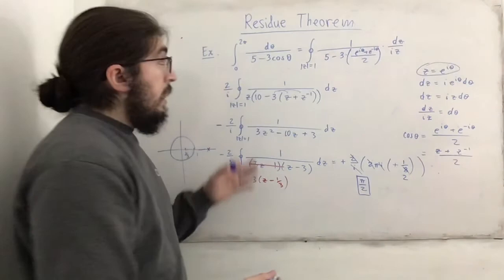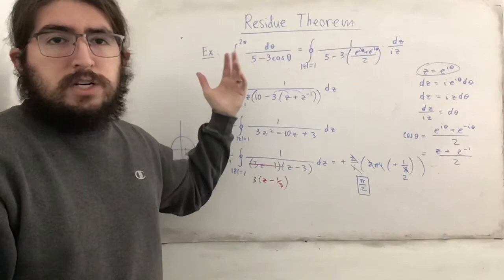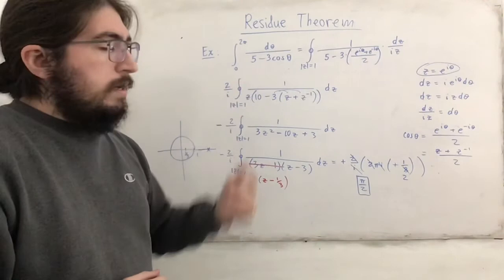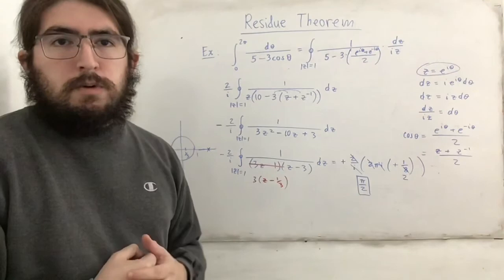That's not a very obvious evaluation, but it's a really nice problem. I'll do another video covering a slightly harder version where we have cosine of 3 theta in the numerator instead of 1 — it's a similar idea but we'll see more residues and higher order poles. Thanks for watching, and I'll see you in the next video.